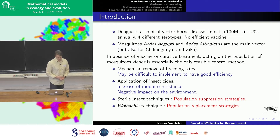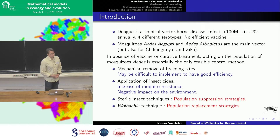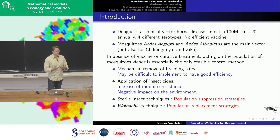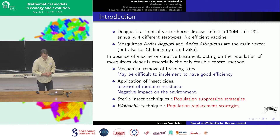People have developed at least two techniques. One is suppression strategies — the most famous is the sterile insect technique, where you release sterile males that mate with females and produce no offspring, hoping to reduce the population. But I want to speak about another strategy, which is a replacement strategy. The idea is to replace the wild population by a population which is unable to transmit the disease, using a bacterium called Wolbachia.